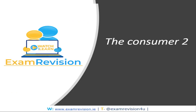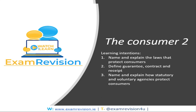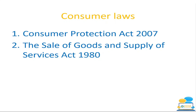Now we're going on to the second half of the consumer chapter — Consumer Part 2. We also have consumer parts three, four, and five which you can find on the examrevision.ie website. The consumer is an area that I as an examiner would recommend you revise and prioritise. Learning intentions include naming and explaining the laws that protect consumers, defining the terms guarantee, contract, and receipt, and naming and explaining how statutory and voluntary agencies protect consumers. The consumer laws we'll look at are the Consumer Protection Act 2007 and the Sale of Goods and Supply of Services Act 1980.